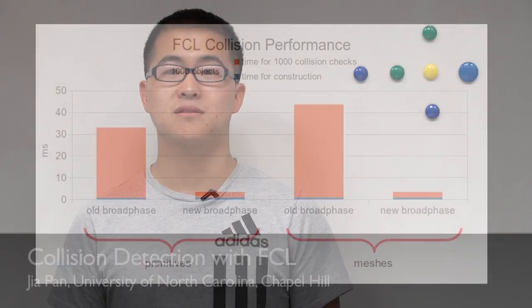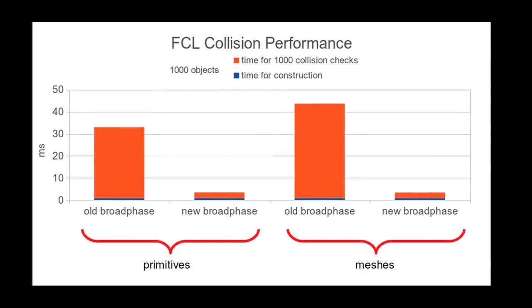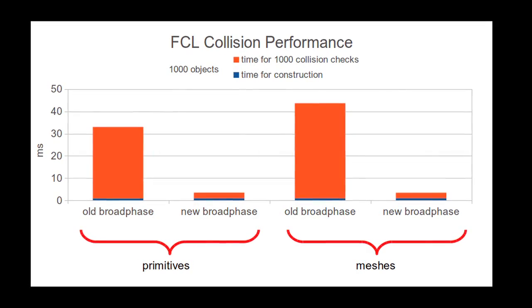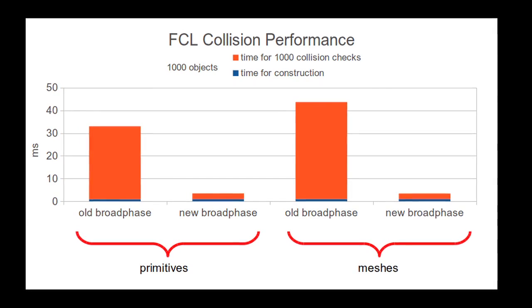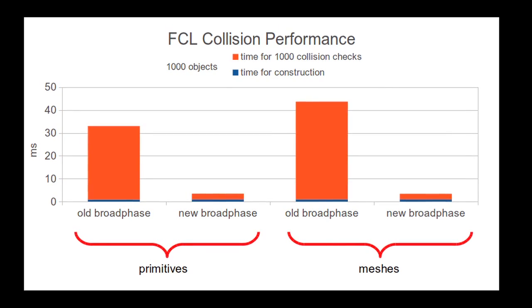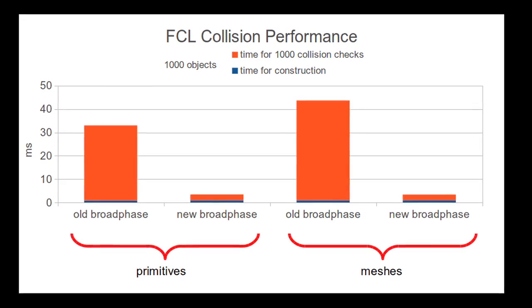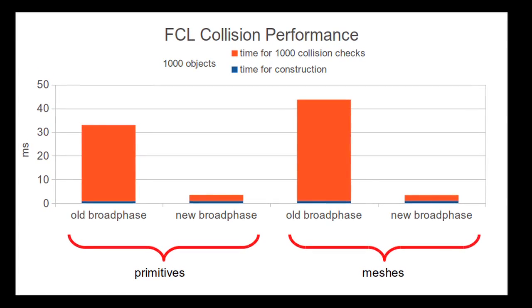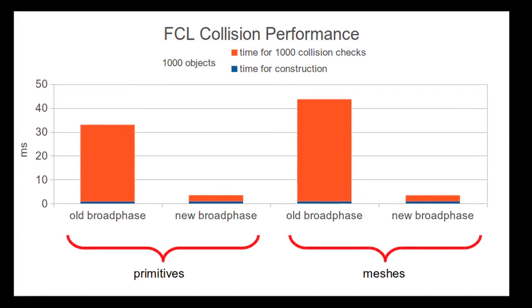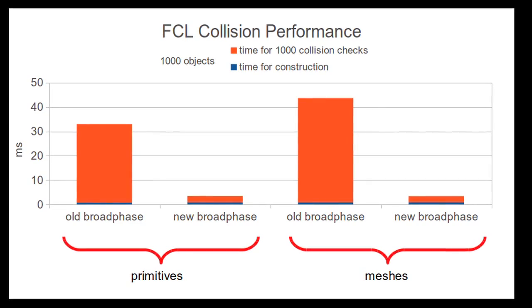My work on FCR includes three parts. First, I improved the efficiency of collision checking and distance computation. FCR now includes specialized algorithms for collision between geometric primitives and additional BVH algorithms that are amenable for both collision checking and distance computation between many objects.